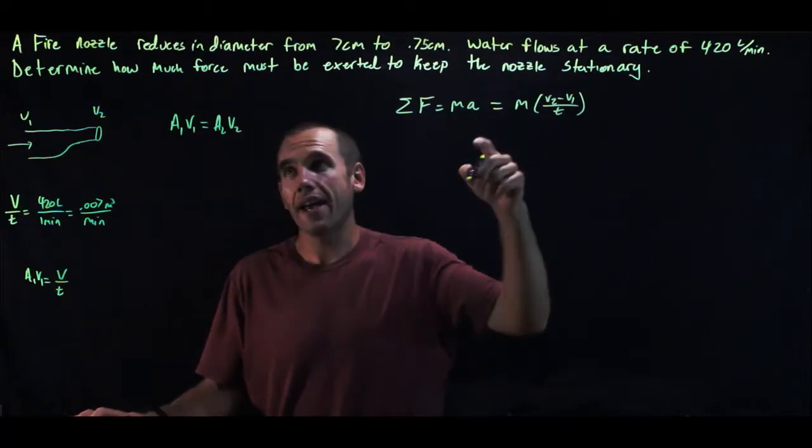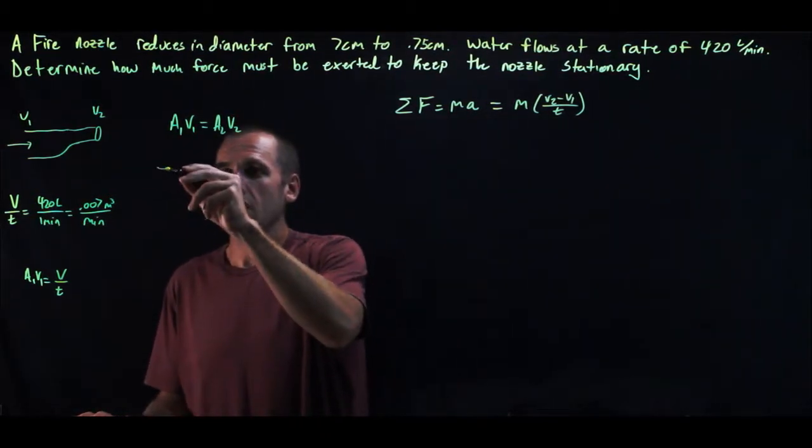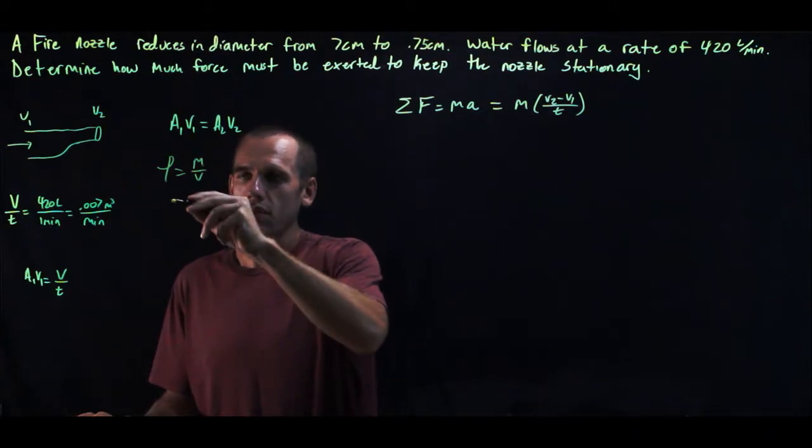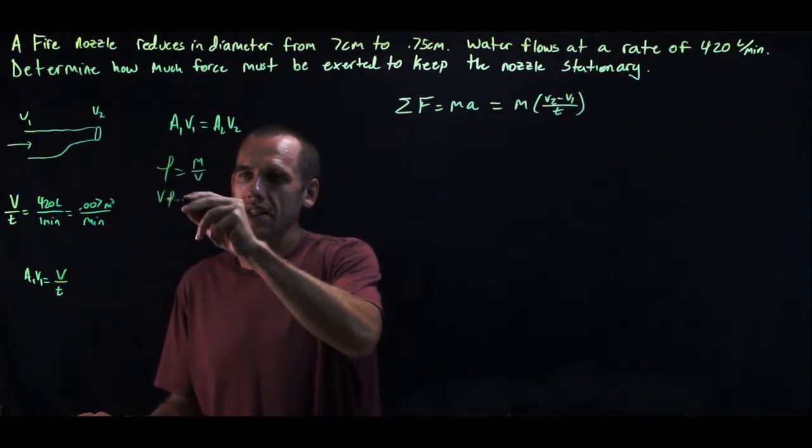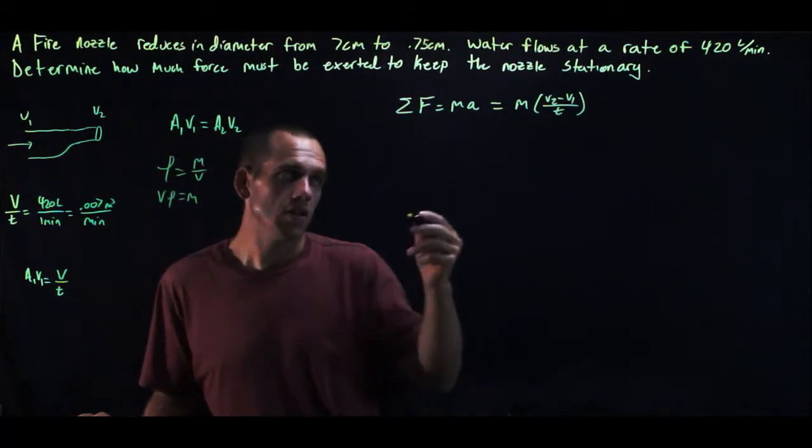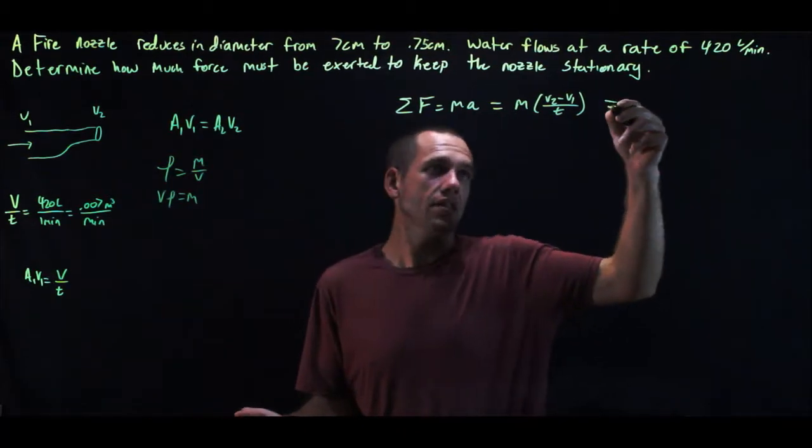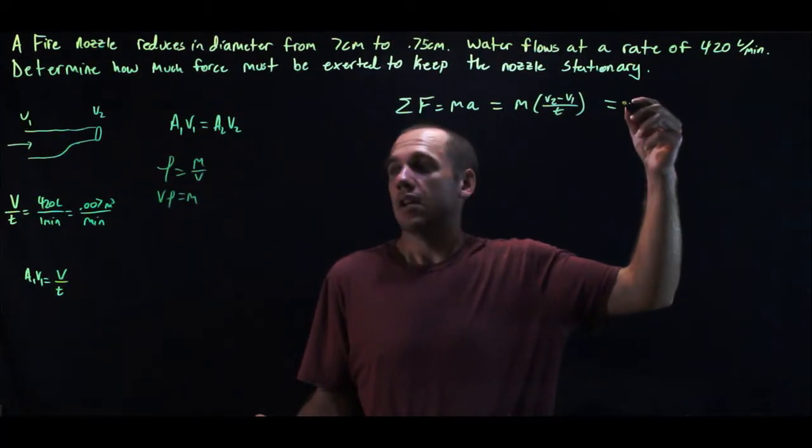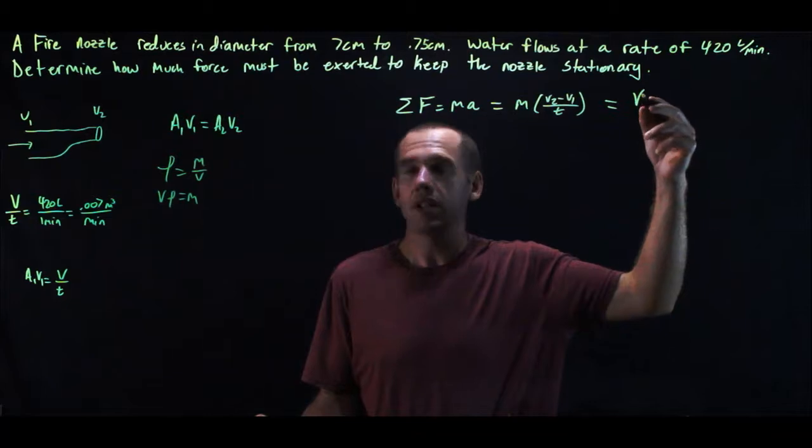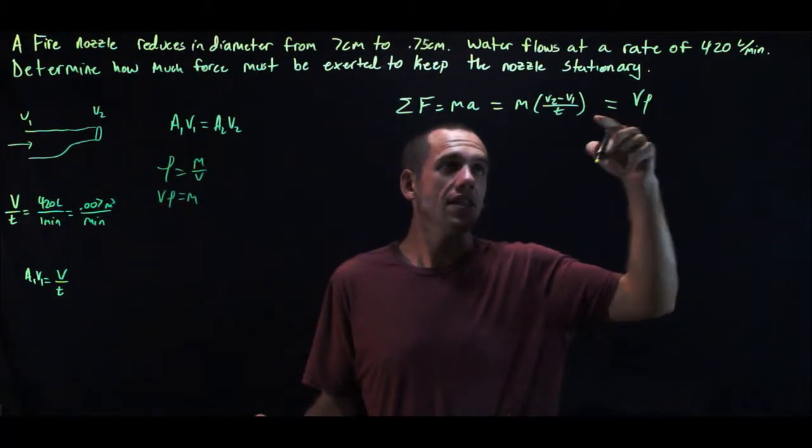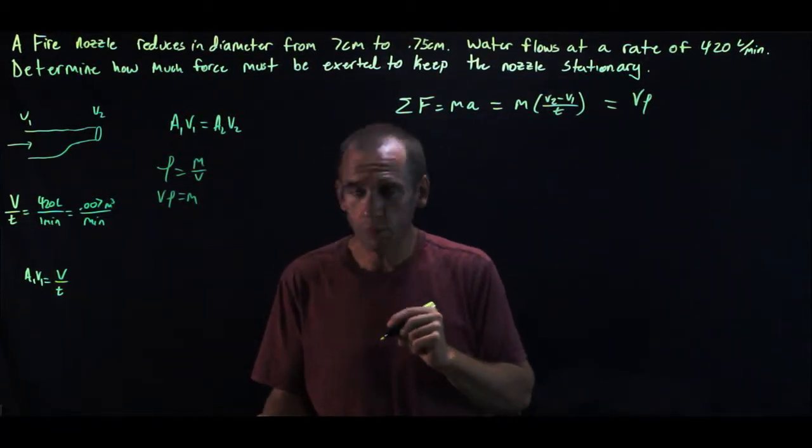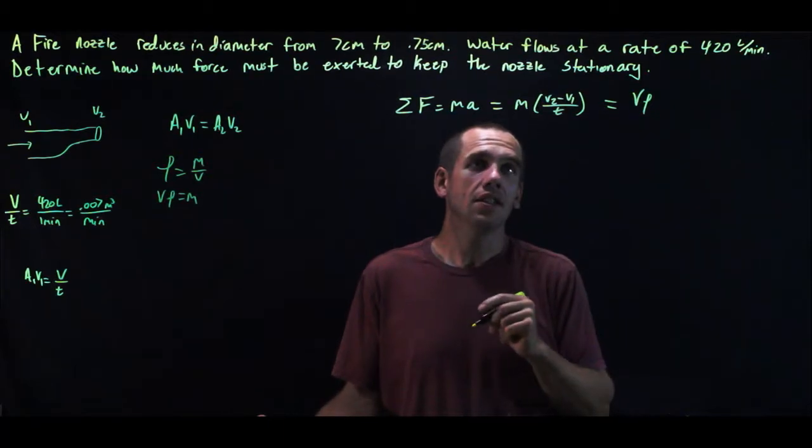And mass, if we go to the density equation, density is mass over volume. So that tells us volume times density is equal to mass. So I can rewrite this as we've got volume times density instead of mass times V2, which is velocity over time.